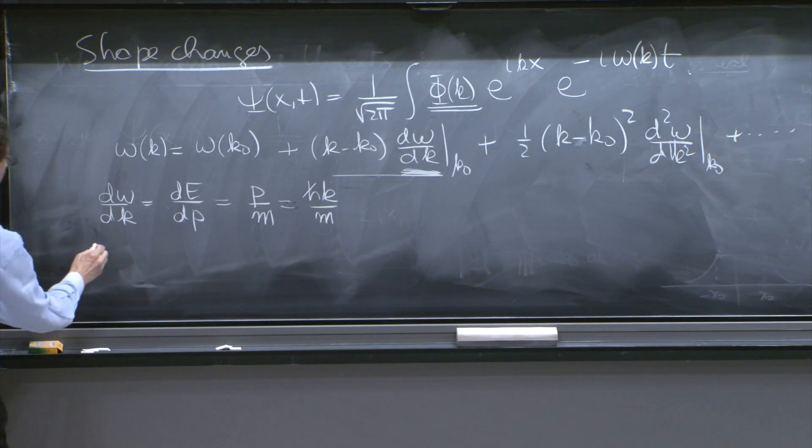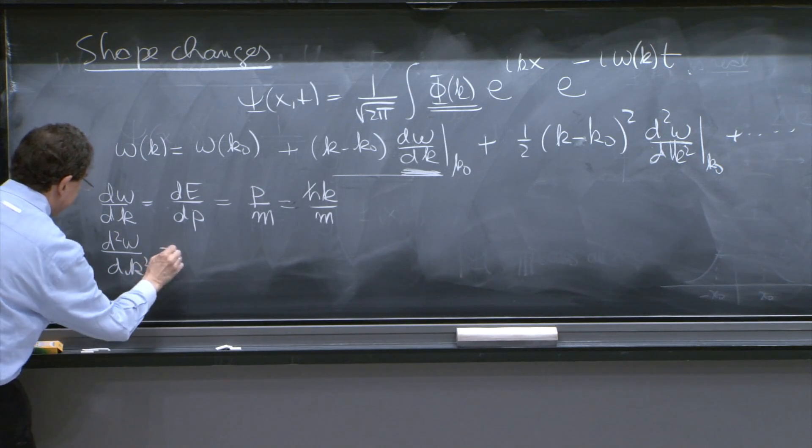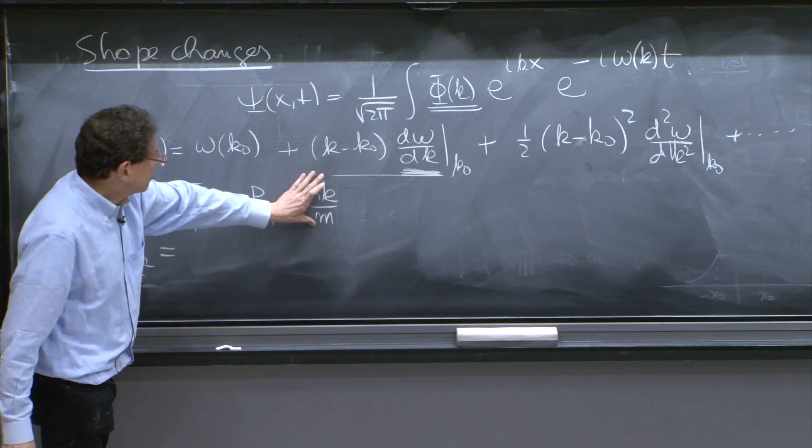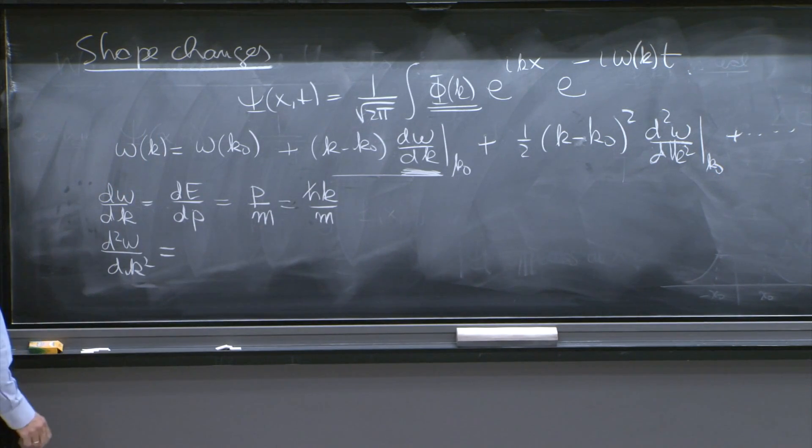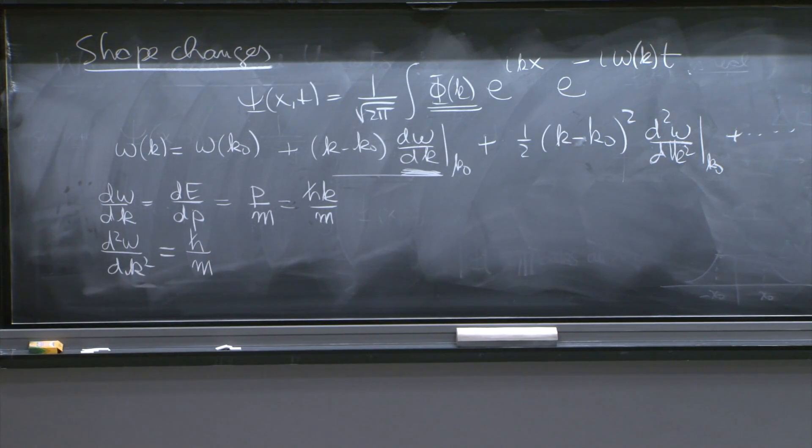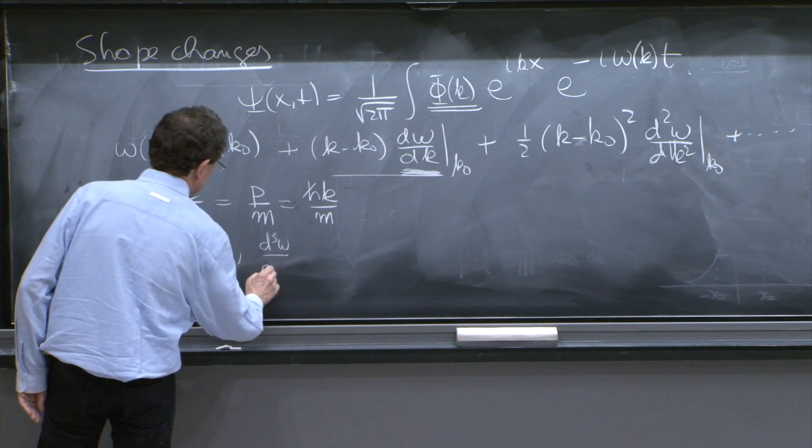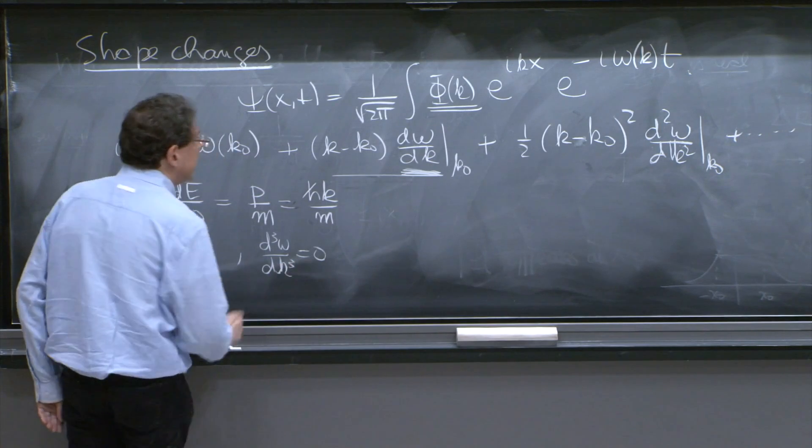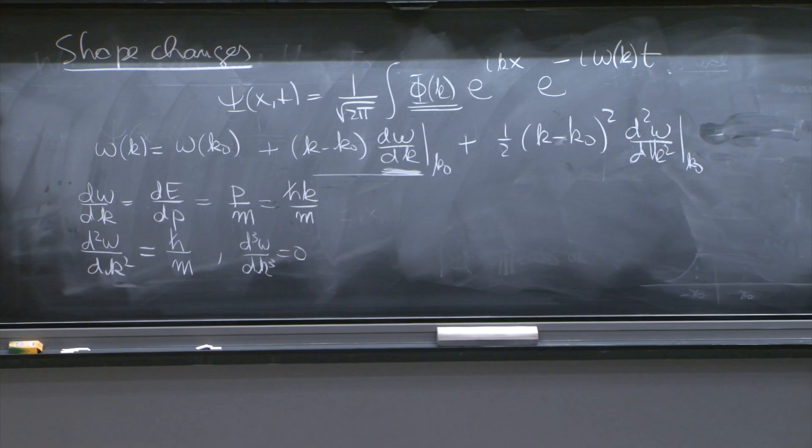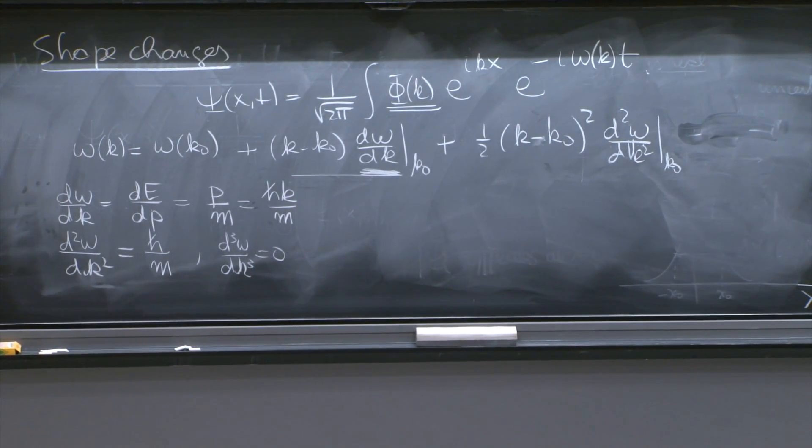So d second omega dk squared, I must differentiate the first derivative with respect to k. I differentiate the first derivative with respect to k and now I get just h bar over m, which is quite nice. And the third derivative, d3 omega dk cubed, is 0. Therefore, I didn't have to worry about these terms. The series terminates. The Taylor series terminates for this term.